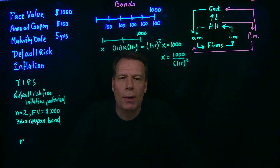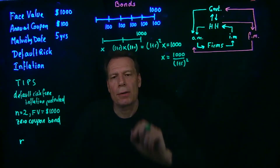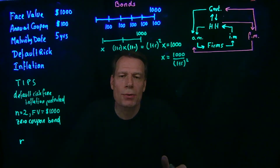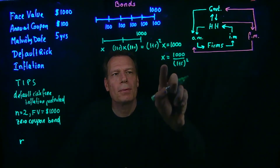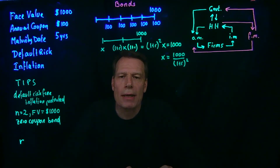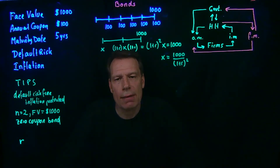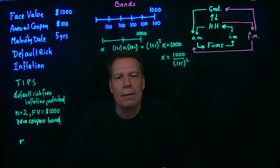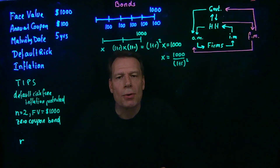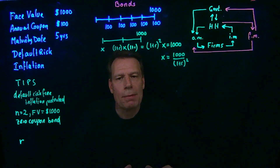Now we can return to the question of how much you'd be willing to pay for this bond. That bond gives you $1,000 two years from now, just as a risk-free, inflation-protected savings account would give you if you put in amount X. So if that bond price is any higher than X, you wouldn't want to pay for it — you'd rather put your money into that savings account. If the price of that bond is any less than X, then nobody would use the savings account and everybody would just buy bonds. So the law of one price tells us that the rate of return on the bond must equal the rate of return on a similar savings account with similar levels of risk.